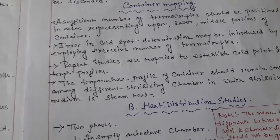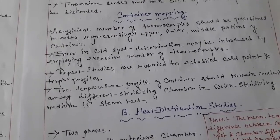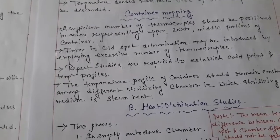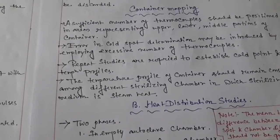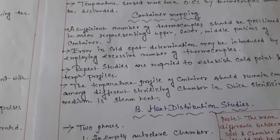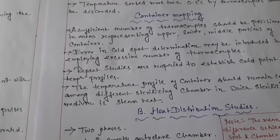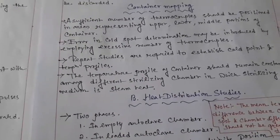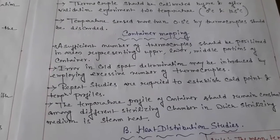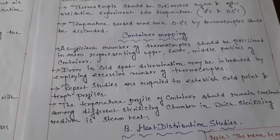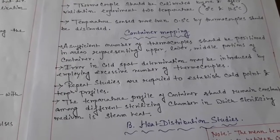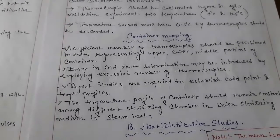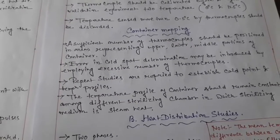Repeat studies are required to establish the cold point and temperature profiles. You have to repeatedly follow the studies when calculating the cold point and temperature. This is very necessary for container mapping validation. The temperature profile of the container should remain constant among different sterilizing chambers in which the sterilizing medium is steam heat.